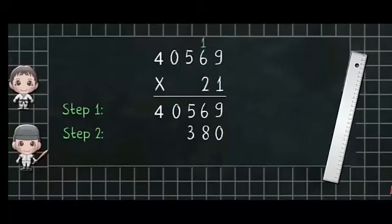So we will write 3 and then carry over 1 in next column. Now 5 into 2 is equal to 10 plus 1, that is 11. So we will write 1 and carried over 1.